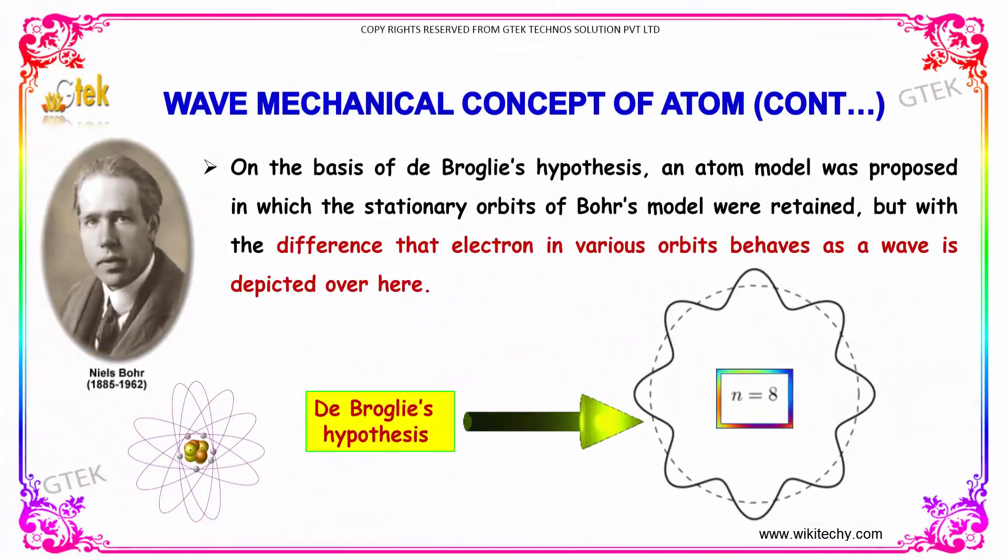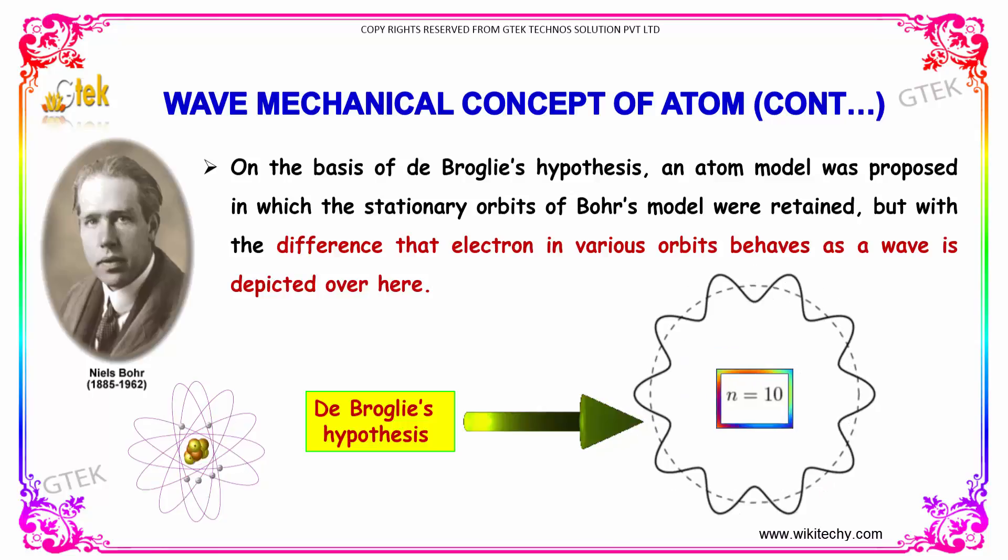On the basis of de Broglie's hypothesis, an atom model was proposed in which the stationary orbits of Bohr's model were retained, but with the difference that electrons in various orbits behave as a wave. You can see the waves.